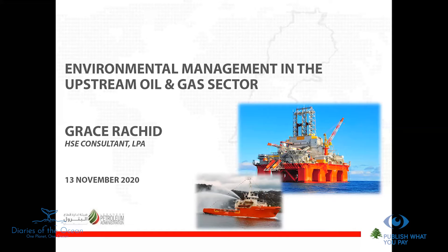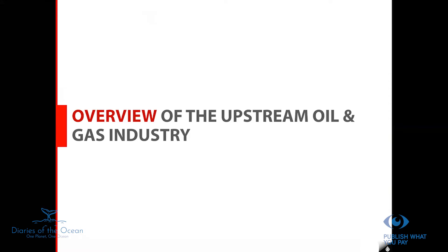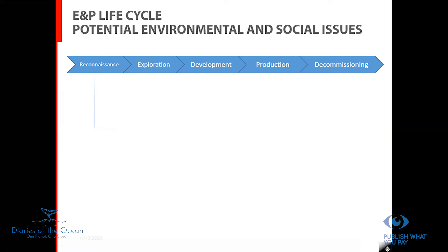I will be talking about environmental management in the upstream oil and gas sector. I'll start with an overview of the upstream oil and gas industry, and then focus more on what we are doing in Lebanon. The upstream, or exploration and production lifecycle, basically consists of five phases: reconnaissance, exploration, development, production, and decommissioning.